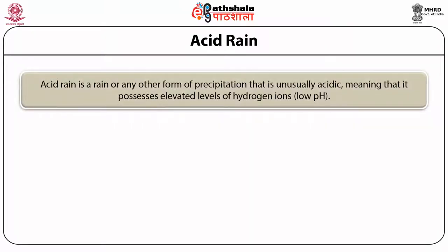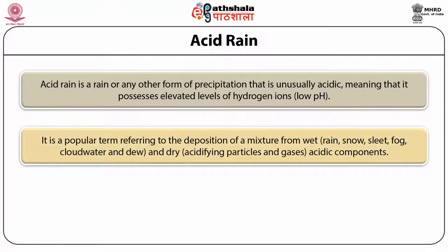Acid rain is rain or any other form of precipitation that is unusually acidic, meaning it possesses elevated levels of hydrogen ions — that is, it has low pH. It is a popular term referring to the deposition of a mixture from wet forms — rain, snow, fog, cloud water and dew — and dry forms — acidifying particles and gas — that form the acidic components of the rain or precipitated water.